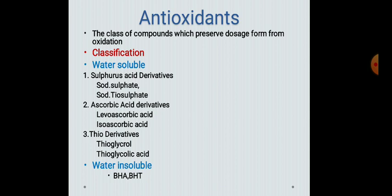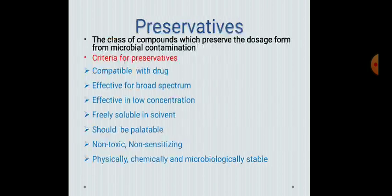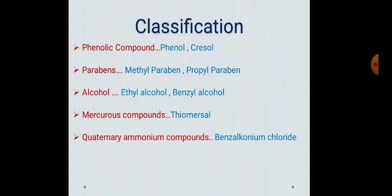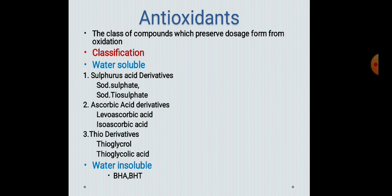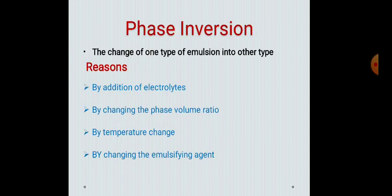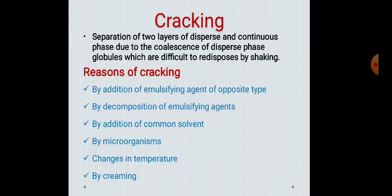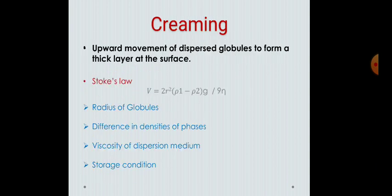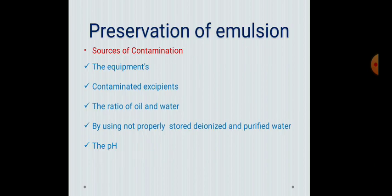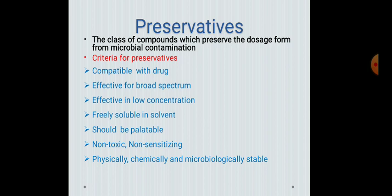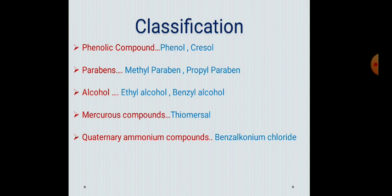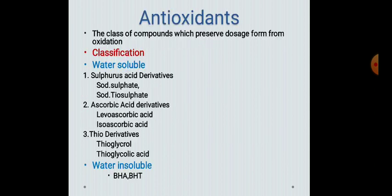In this lecture, we discussed the different stability parameters of emulsion — three sources: cracking, creaming, and phase inversion. Then preservation of emulsion, sources of contamination, addition of preservatives, what preservatives are, the criteria for preservatives, classification of preservatives, and lastly antioxidants — what they are, their classification, and the ideal properties an antioxidant must possess. Thank you.